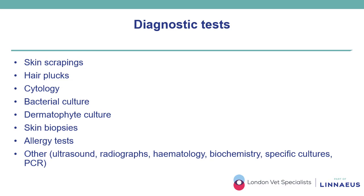Once a list of differential diagnoses has been formulated, various conditions should be ruled in or out by performing pertinent tests. Basic tests include skin scrapings, hair plucks, and cytology. More in-depth tests include bacterial culture, dermatophyte culture, and skin biopsies. Other tests might include allergy tests such as a food trial, or for systemic disease: ultrasound, radiographs, haematology and biochemistry profiles, or specific cultures and PCR.